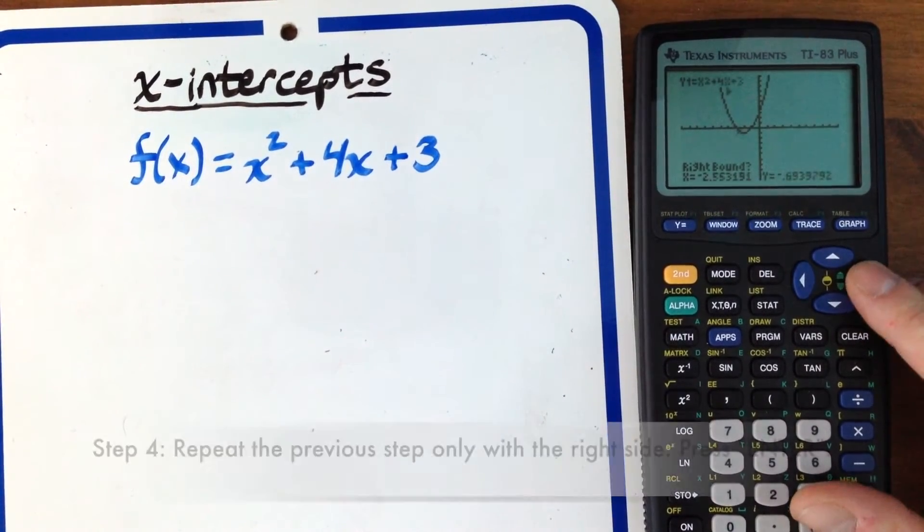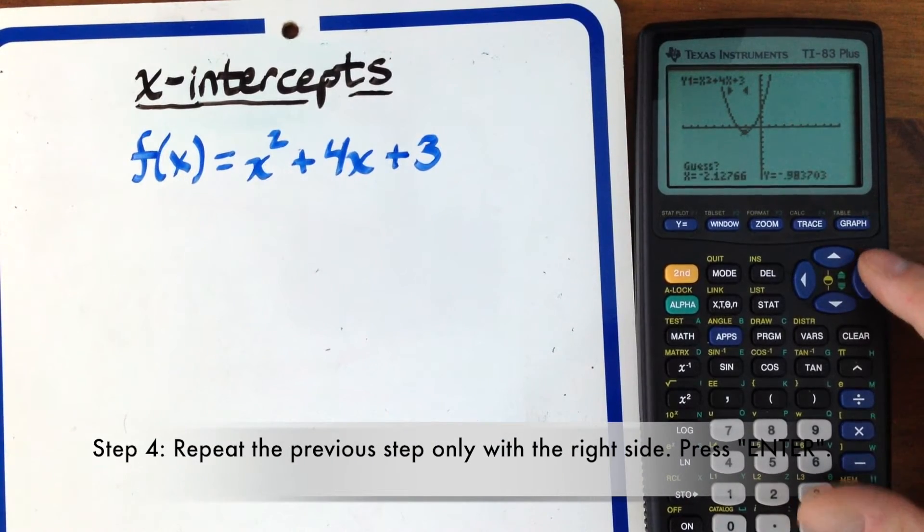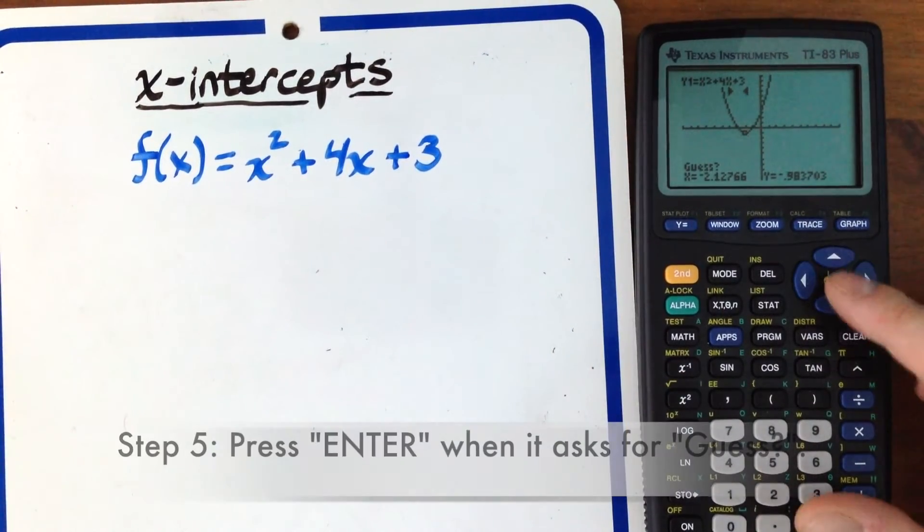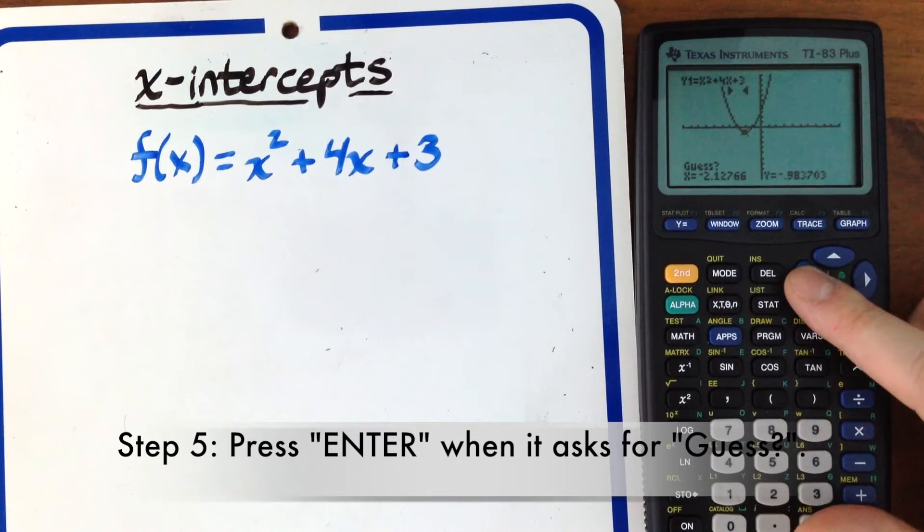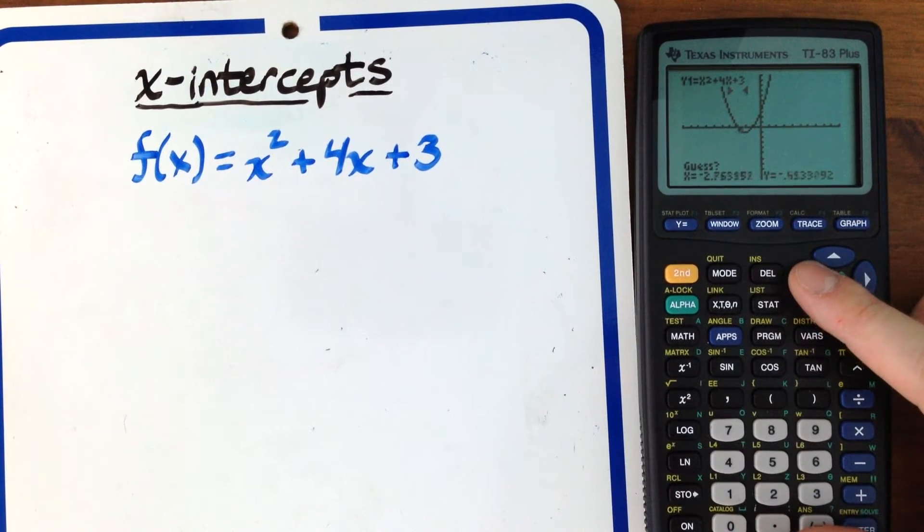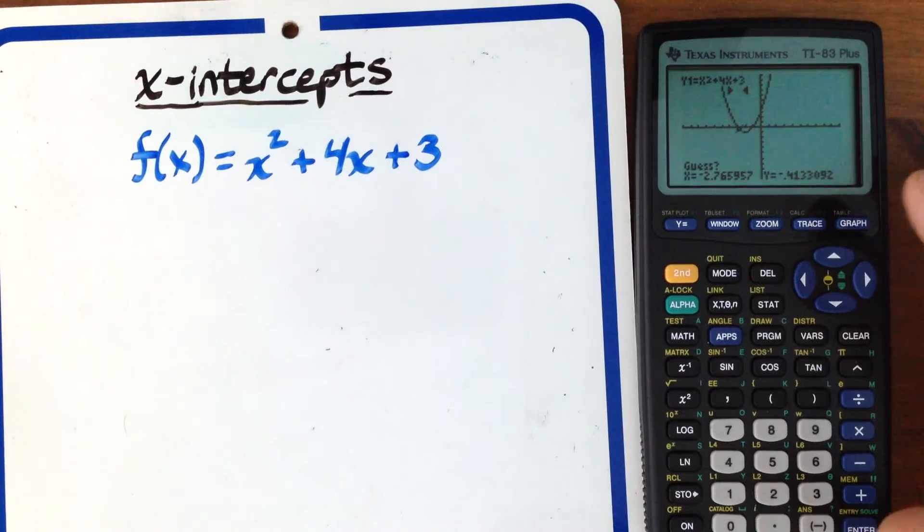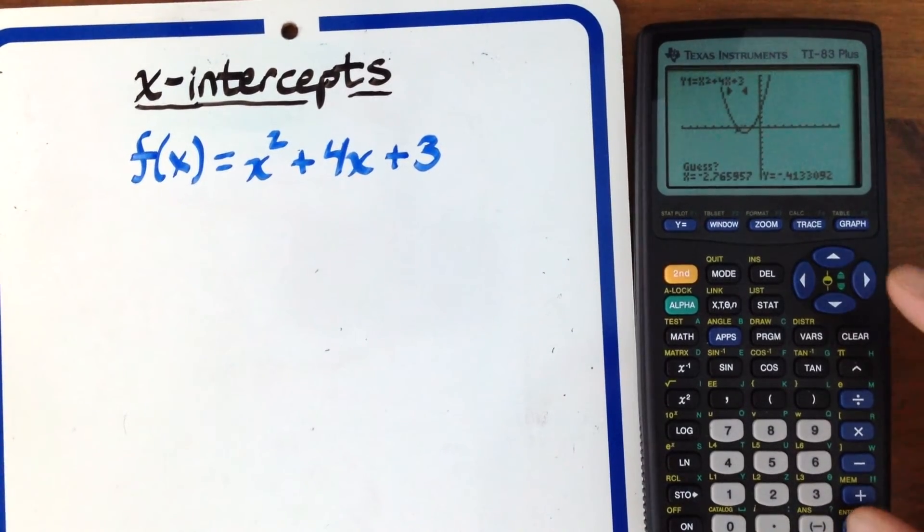Then move below it on the right side. It will say guess. You can just press Enter again, or you can move to somewhere in between. It works a bit faster if you guess.